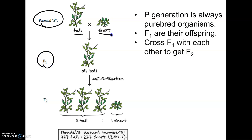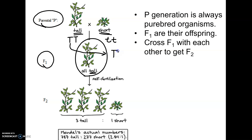He crossed tall and short parents — the P generation — and all the offspring came out tall. In every cross he did, one trait always covered up the other, which is where he got the word dominant. We pick one letter to represent the trait, using the letter for the dominant version. So tall is dominant, we use T. The tall purebred parent carries two copies: big T, big T. The short purebred would be little t, little t. Each parent randomly gives one copy to the offspring, so the offspring would be big T, little t — and they show tall because tall is dominant.